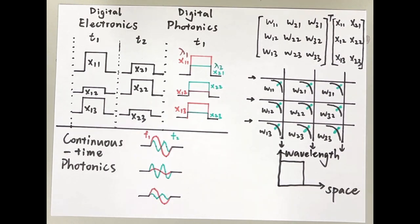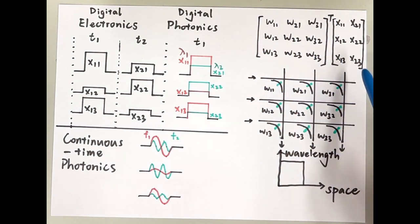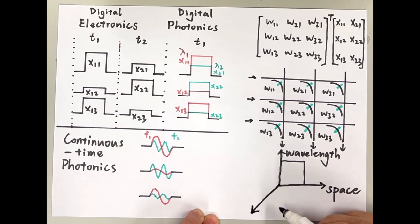If you add this capability to wavelength division multiplexing, you can implement many such matrix multiplications in parallel. This adds the third dimension for your data processing, turning your square into a cube.